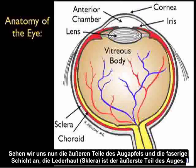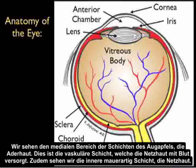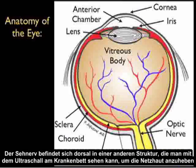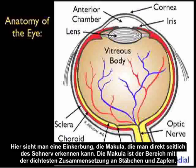The outer fibrous coat of the eyeball is the sclera. Moving inward, we see the choroid — the vascular layer supplying the retina with blood — and then the inner neural layer, the retina. The optic nerve enters posteriorly, another structure visible on bedside ultrasound, giving rise to the retina. Just lateral to the optic nerve is the indentation of the macula, the area of densest composition of rods and cones.